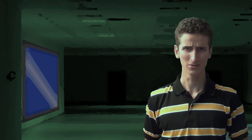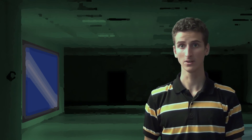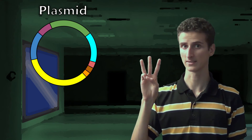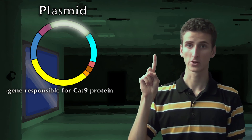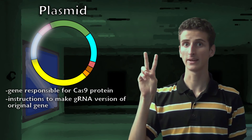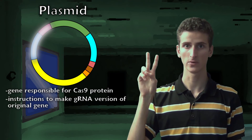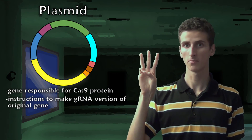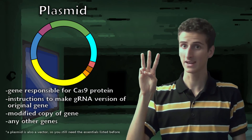So how do you use CRISPR? You need to create a plasmid with three things: the gene responsible for creating the Cas9 protein, instructions to make a guide RNA version of the original gene you wish to change, and the modified copy of that gene, plus any other genes you want to insert. Then you can use the gene gun to get that plasmid into the nucleus, and it'll get right to work, replacing all copies of the old gene with the new one.